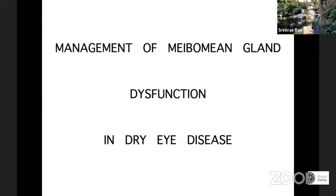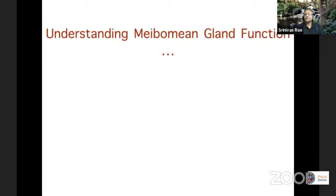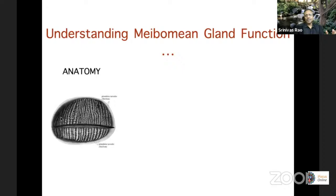From tears, the next topic on the ocular surface is the lid. The lid is becoming a topic of great interest because of the understanding that meibomian glands and their function or dysfunction is very important in ocular surface and dry eye disease. For those interested in IOVS, there's a special issue in 2011, volume 52, number 4, which deals extensively and exclusively with various aspects of meibomian gland function.